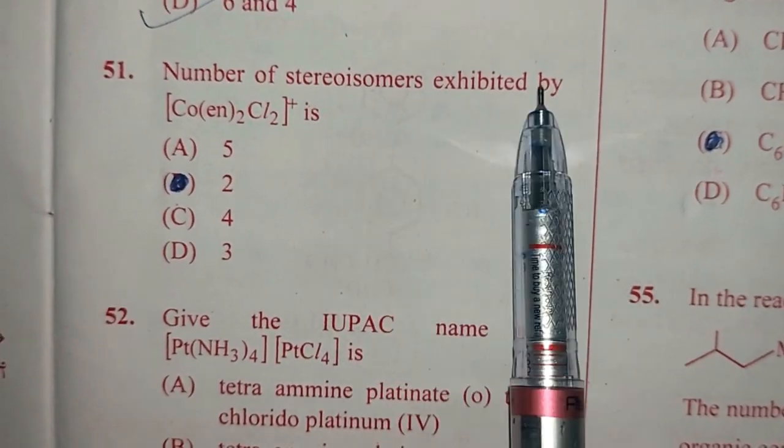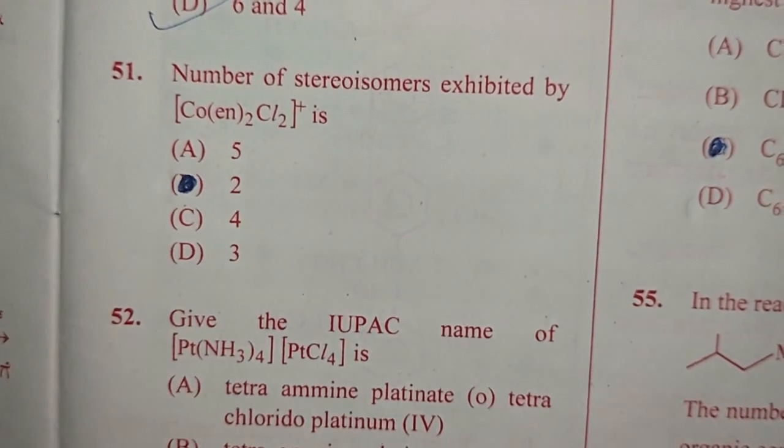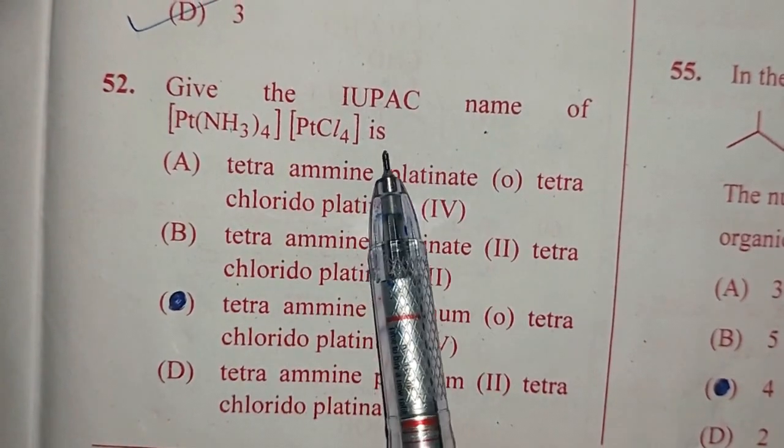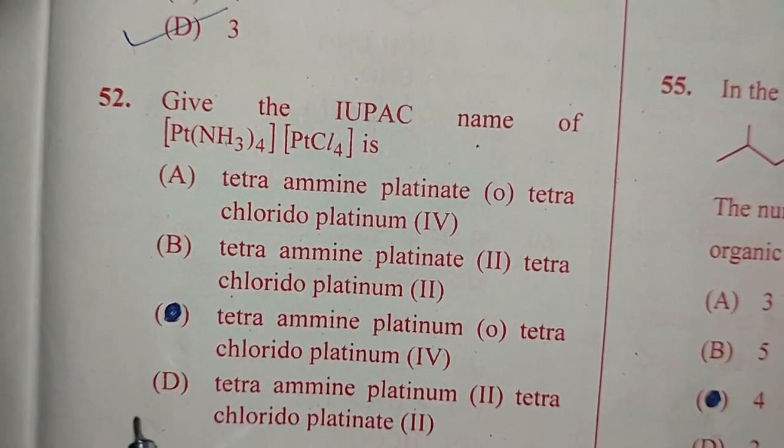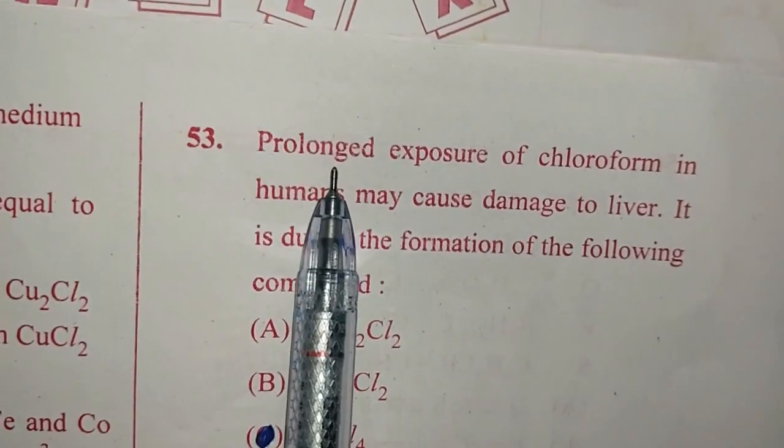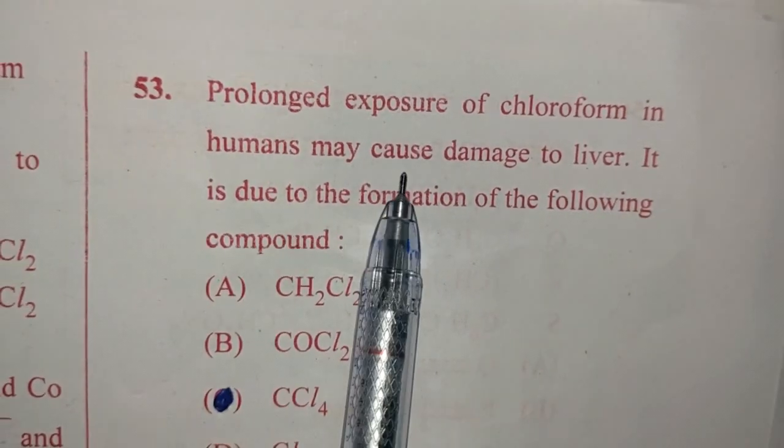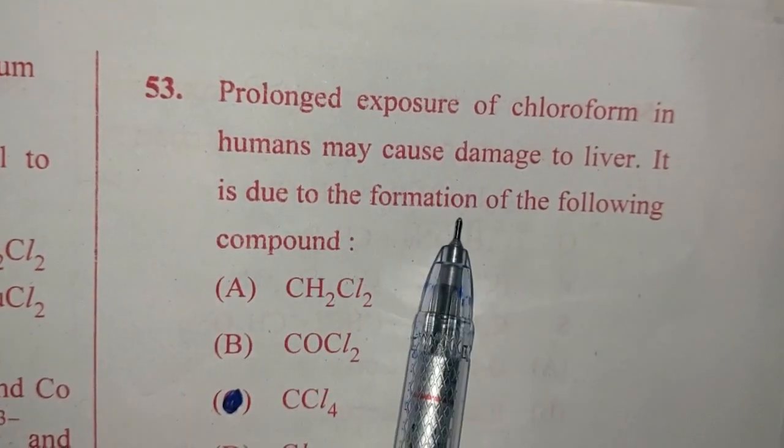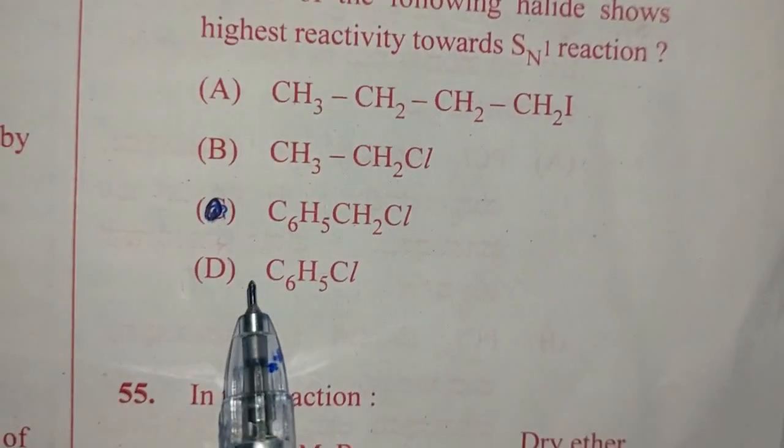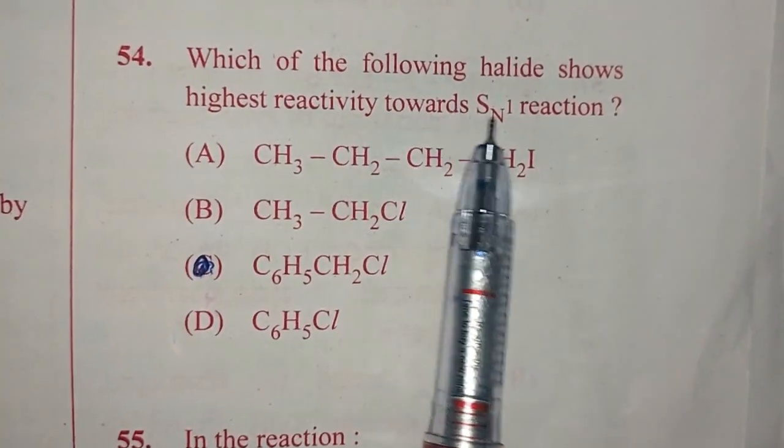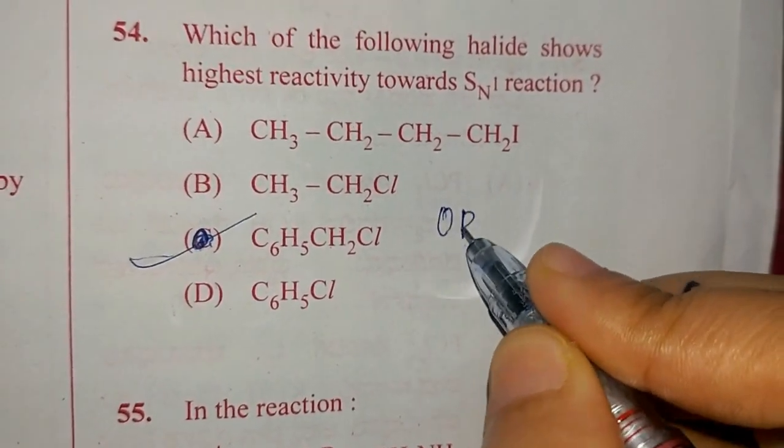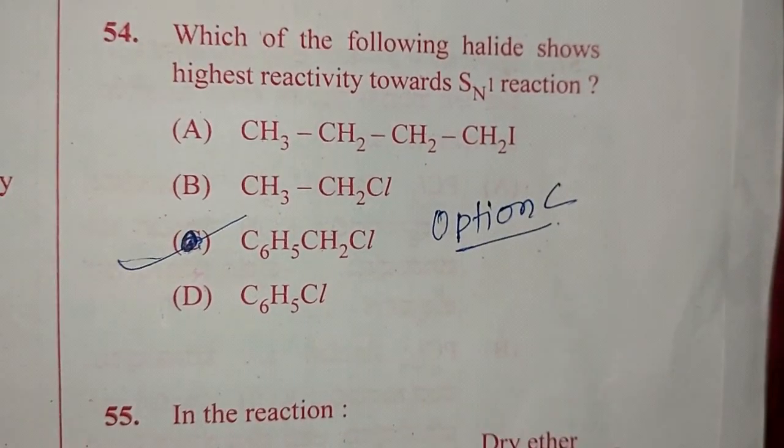Question number 51. Number of stereoisomers exhibited by Co(ethane-1,2-diamine)2Cl2+ is 3, option D. Question 52. Give the IUPAC name of the given complex. It is a coordination isomer, positively charged and negatively charged ions. So answer is option D. Question number 53. Prolonged exposure of chloroform in humans may cause damage to liver. It is due to the formation of the following compound i.e. phosgene COCl2, option B. Question number 54. Which of the following halides show highest reactivity towards SN1 reaction? And the answer for this is option C, C6H5-CH2Cl.